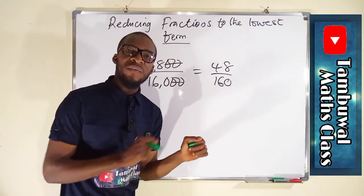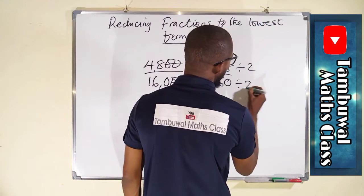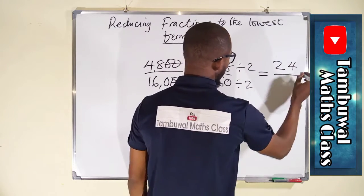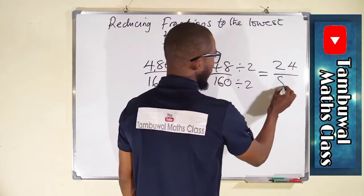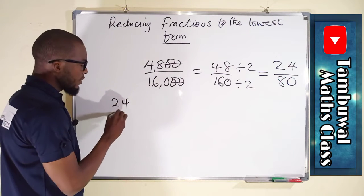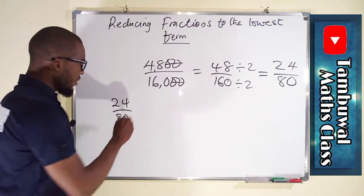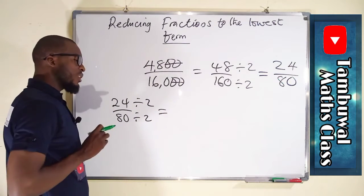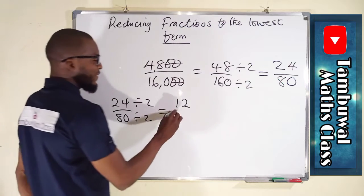48 and 160 are both even numbers, so we divide by 2: 2 into 48 gives 24, and 2 into 160 gives 80. Still both even, so we divide by 2 again: 24 divided by 2 gives 12, and 80 divided by 2 gives 40.